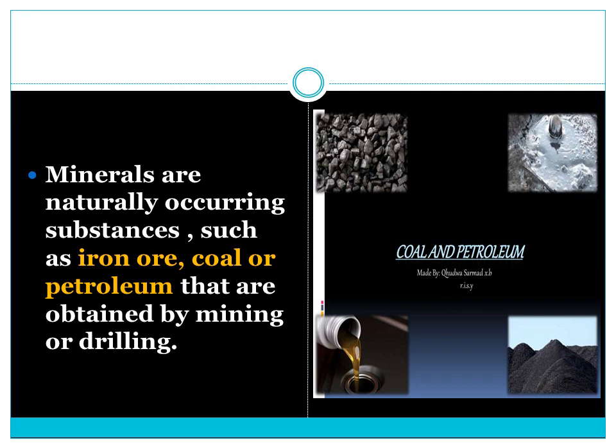Iron ore, coal, or petroleum — what we use as petroleum and diesel — in raw form it is available naturally. Coal is that black material. These are obtained by mining or drilling the earth, and by that we will get iron ore, coal, and petroleum.